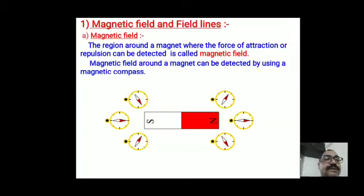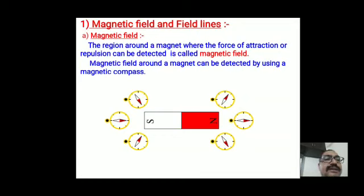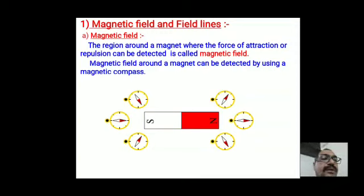Now let's learn the new topic: magnetic field and field lines. The region around a magnet where the force of attraction or repulsion can be detected is called the magnetic field. The magnetic field around a magnet can be detected by using a magnetic compass. In the activity, you take a bar magnet, fix it on white paper or cardboard, and take a compass nearby.